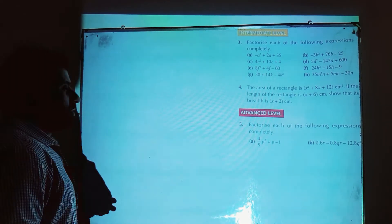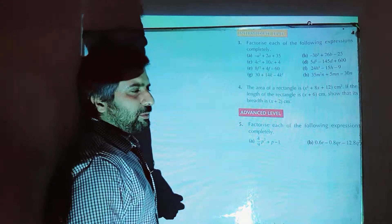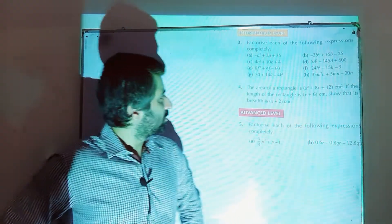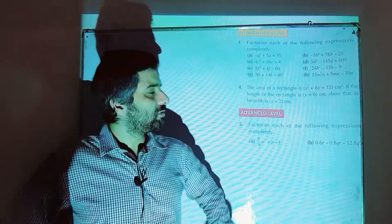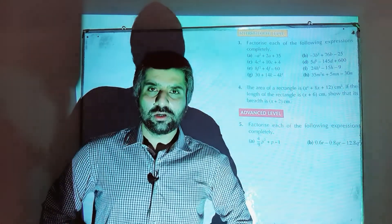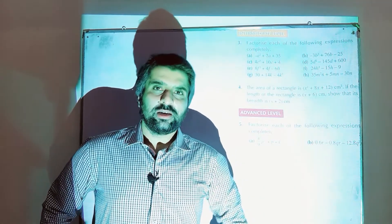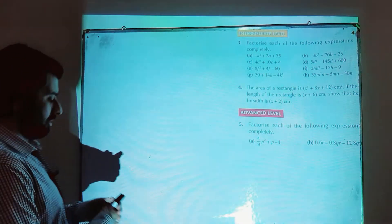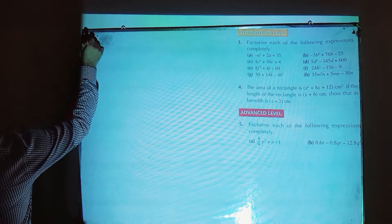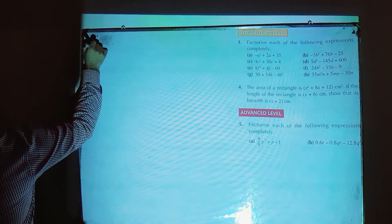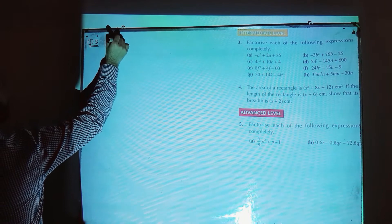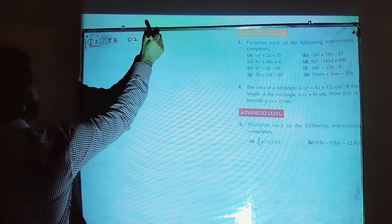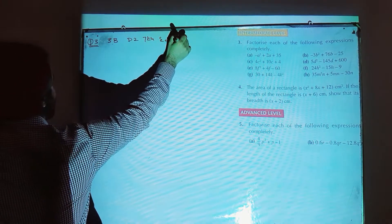In this lesson I am going to solve exercise 3b of D2 7th edition, question number 3, which is related to factorization from intermediate level. I start from part a.